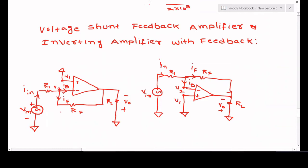It is called an inverting amplifier because the external input voltage is applied to the inverting terminal of the op-amp. In contrast, for the voltage series feedback amplifier, the input voltage is applied to the non-inverting terminal, which is why that configuration is called a non-inverting amplifier.